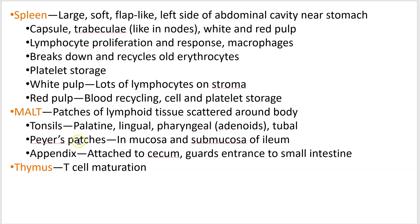Here's MALT with specific examples. Your tonsils — you have four sets of tonsils, sometimes one big patch, sometimes paired. They're in the back of your throat. If you've ever heard of someone having their adenoids removed, those are infected pharyngeal tonsils. Peyer's patches are in your ileum of your small intestine, and we'll see those in the digestive system chapter.